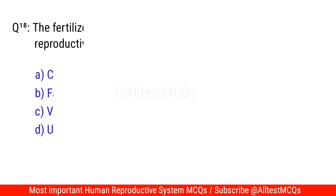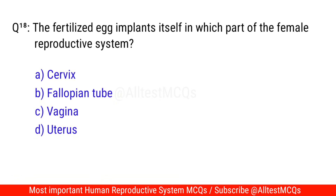Question No. 18: The fertilized egg implants itself in which part of the female reproductive system? The correct option is D. Uterus.